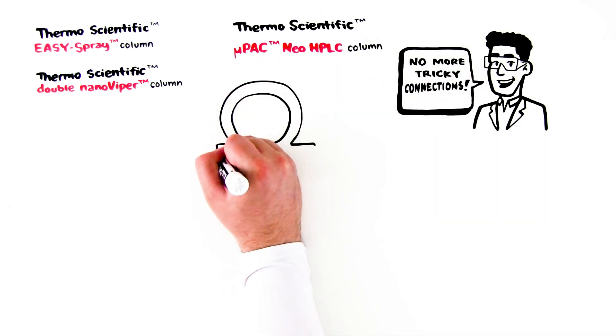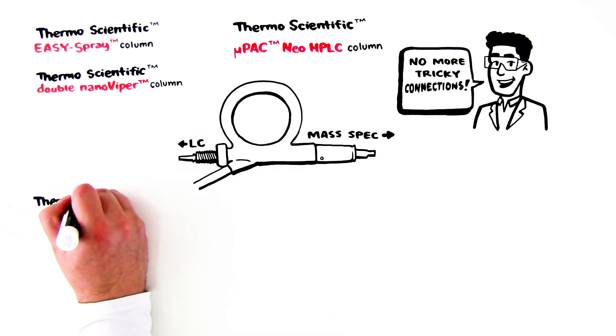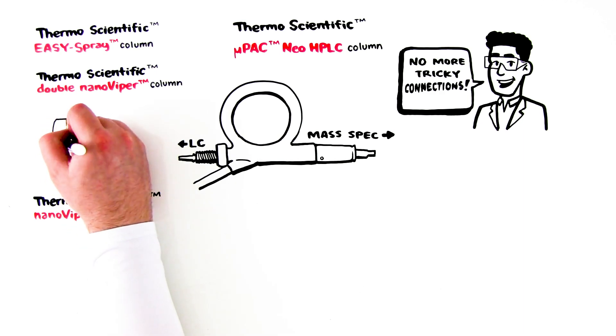The Easy Spray column has two connections – one from the LC and one to the mass spectrometer. The Thermoscientific Nano Viper fitting enables a trouble-free, secure connection from the LC to the column.